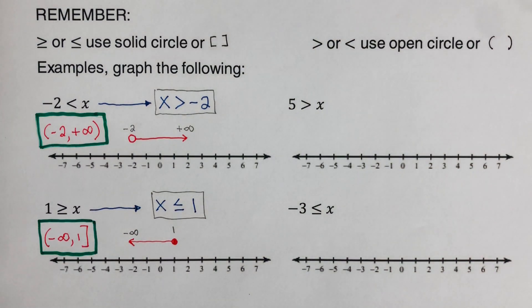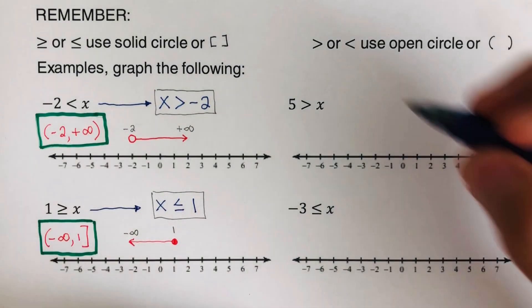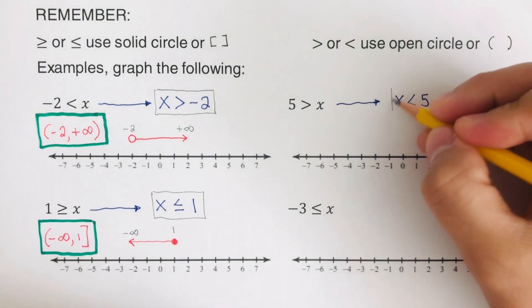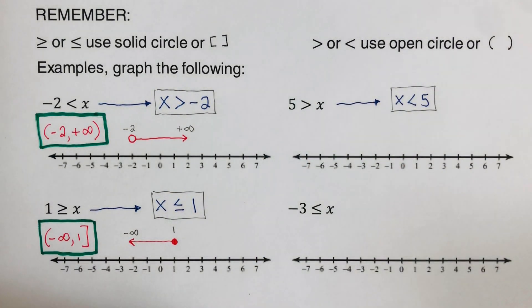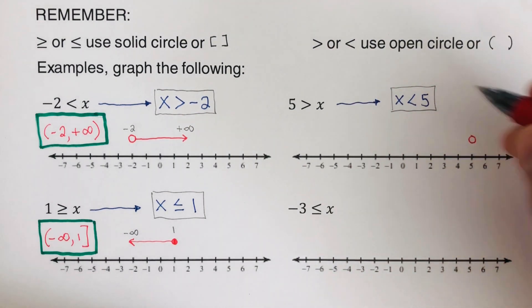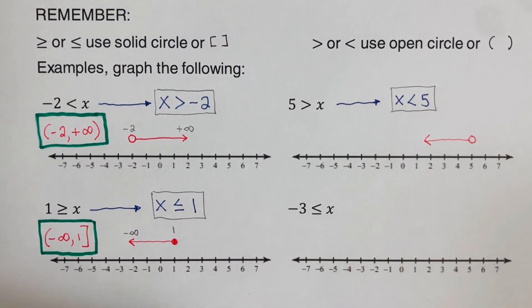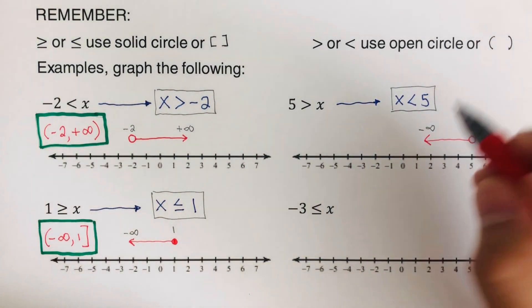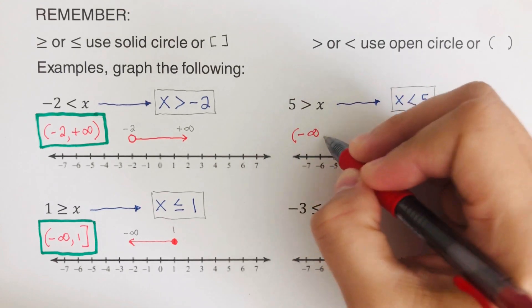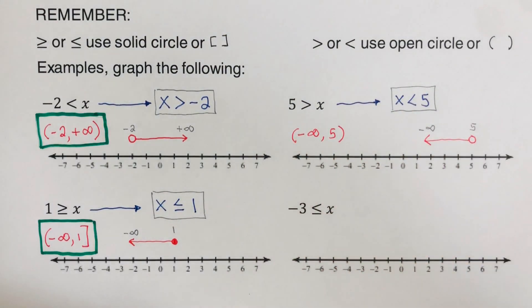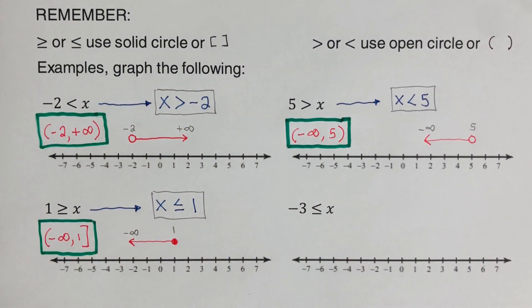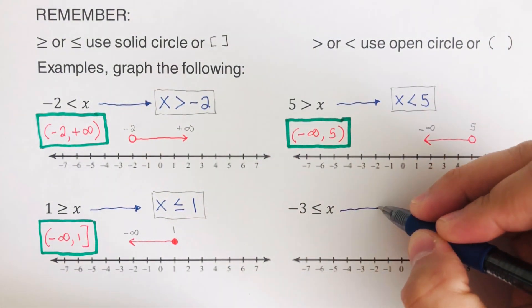For 5 > x, we rewrite the equivalent inequality as x < 5. We use an open circle on 5, and the arrowhead is directed to the left going to negative infinity. In interval notation, the solution is (-∞, 5), using a parenthesis since this is an open circle.